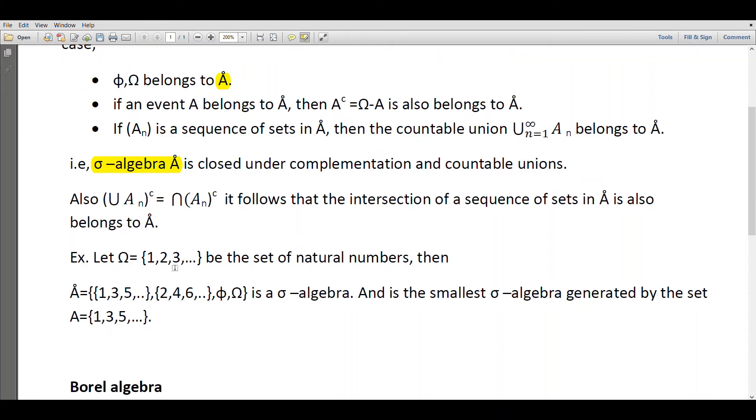Now let's consider an example. Let the sample space Ω = {1,2,3,...}, the set of all natural numbers, and if we take event A = {1,3,5,...}, the set of odd numbers.